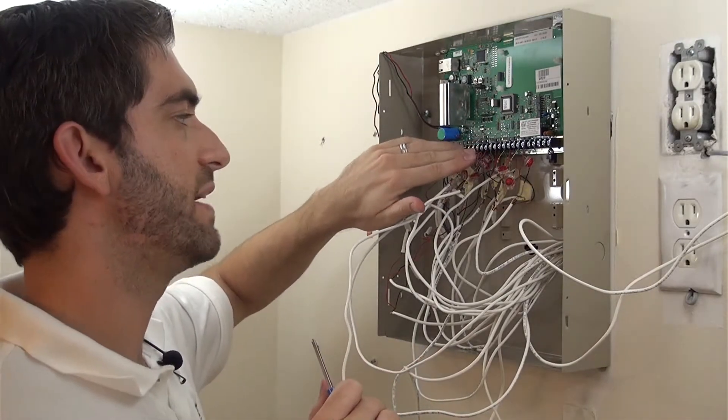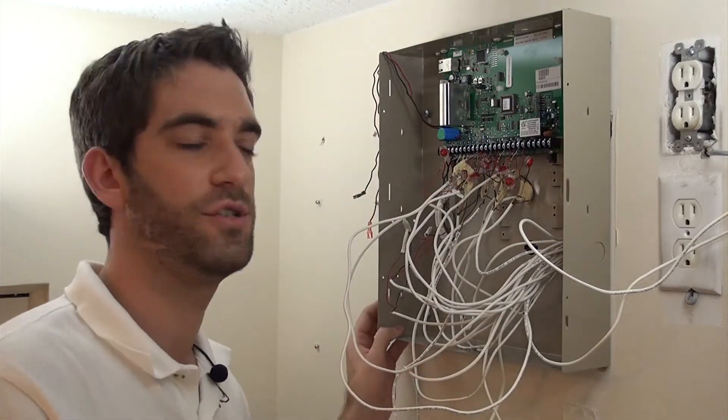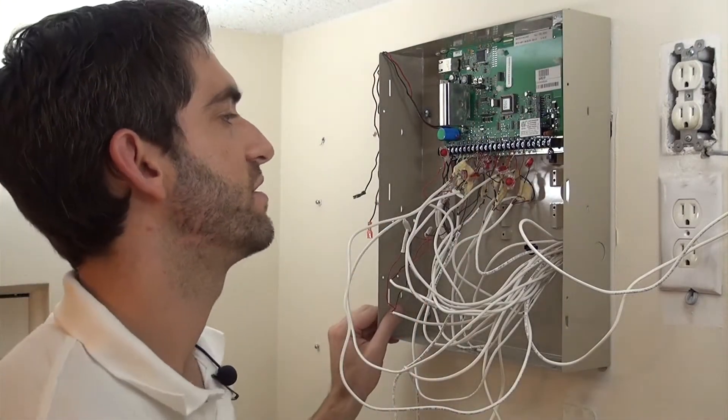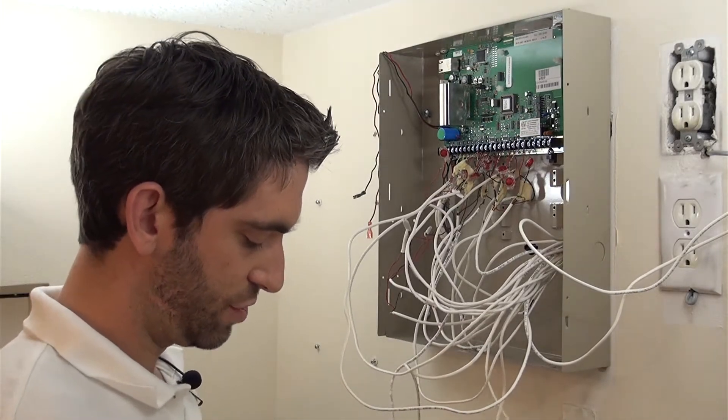And when the master bedroom windows go off, the system will see that the 6.2 resistor value changed. Know that it was that zone. So it's a handy way to be able to use additional zones on the panel.